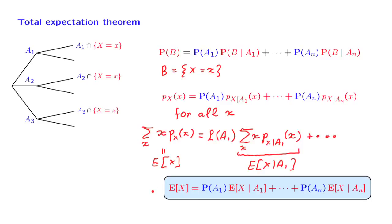So what we have established is this particular formula, which is called the total expectation theorem. It tells us that the expected value of a random variable can be calculated by considering different scenarios, finding the expected value under each of the possible scenarios, and weigh them, weigh the scenarios, according to their respective probabilities.